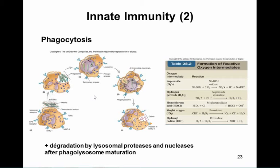The important receptors on neutrophils mediating phagocytosis are complement receptors and Fc gamma receptors. This means that complement binding to bacteria and antibodies binding to bacteria opsonize these cells and allow phagocytosis by neutrophils. There is a coordination between complement and the cellular branch of the immune system.